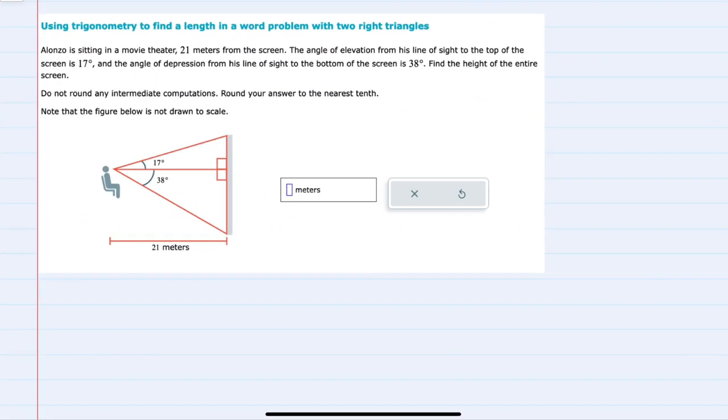In this example, we're told that Alonzo is sitting in a movie theater 21 meters from the screen. We're given the angle of elevation from his line of sight to the top of the screen is 17 degrees, and the angle of depression from his line of sight to the bottom of the screen is 38 degrees. We're asked to find the height of the entire screen.